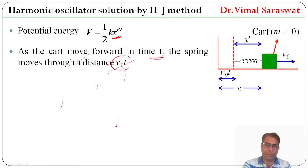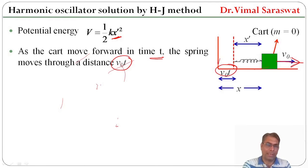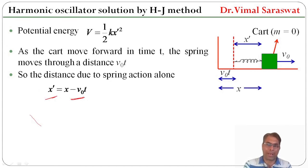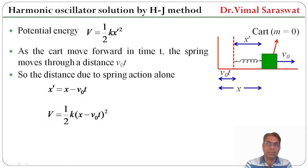As the cart moves forward in time t, the spring moves through a distance v₀t. So the initial position of the spring is here, and after time t the spring is at this new position. Therefore the distance due to spring action alone is x dash equal to x minus v₀t. So this distance x dash equals x minus v₀t.